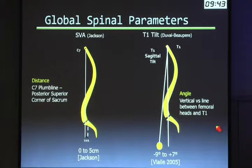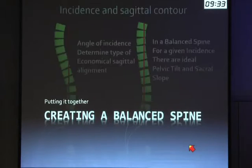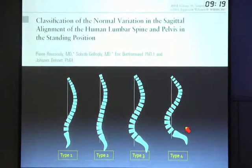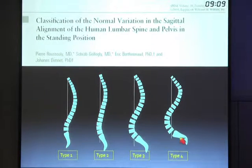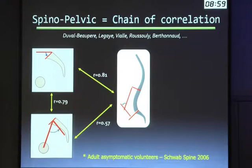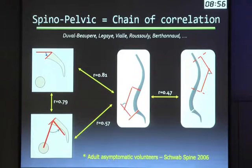Our goal is to have a C7 plumb line that crosses through the L5-S1 disc, and a T1 tilt angle that goes from T1 to the pelvis running through the L5-S1 disc — that angle should be close to zero. To make a balanced spine: the more pelvic incidence someone has, the more lordosis they're going to need and the more kyphosis they'll have. Someone with a lower PI is going to have less of these parameters. Generally, more PI means more lordosis and more lordosis means more kyphosis.